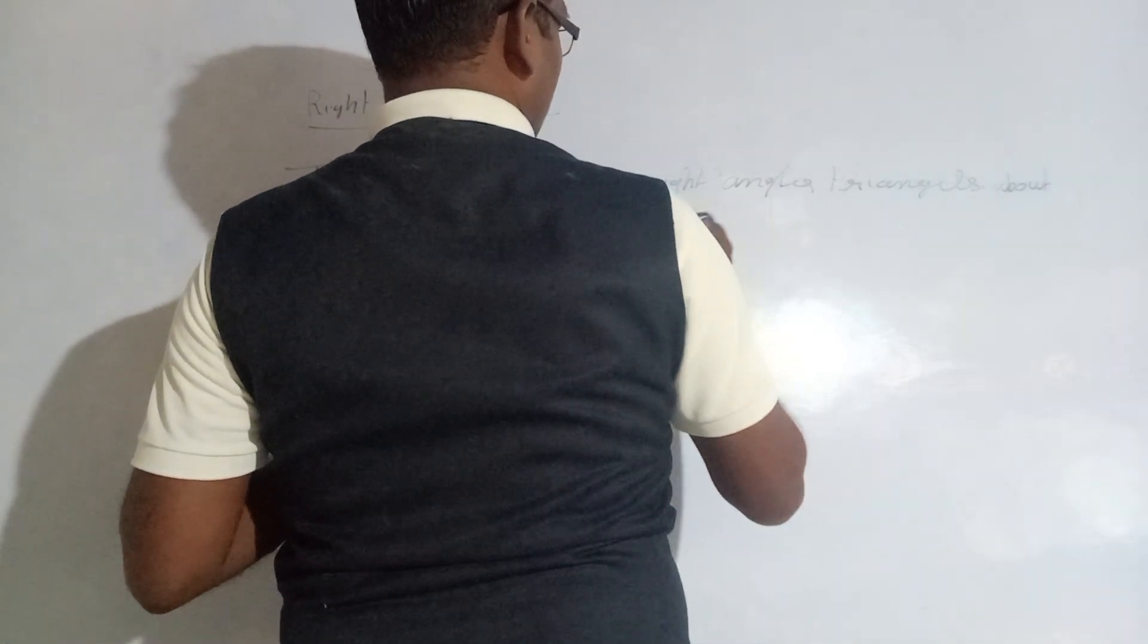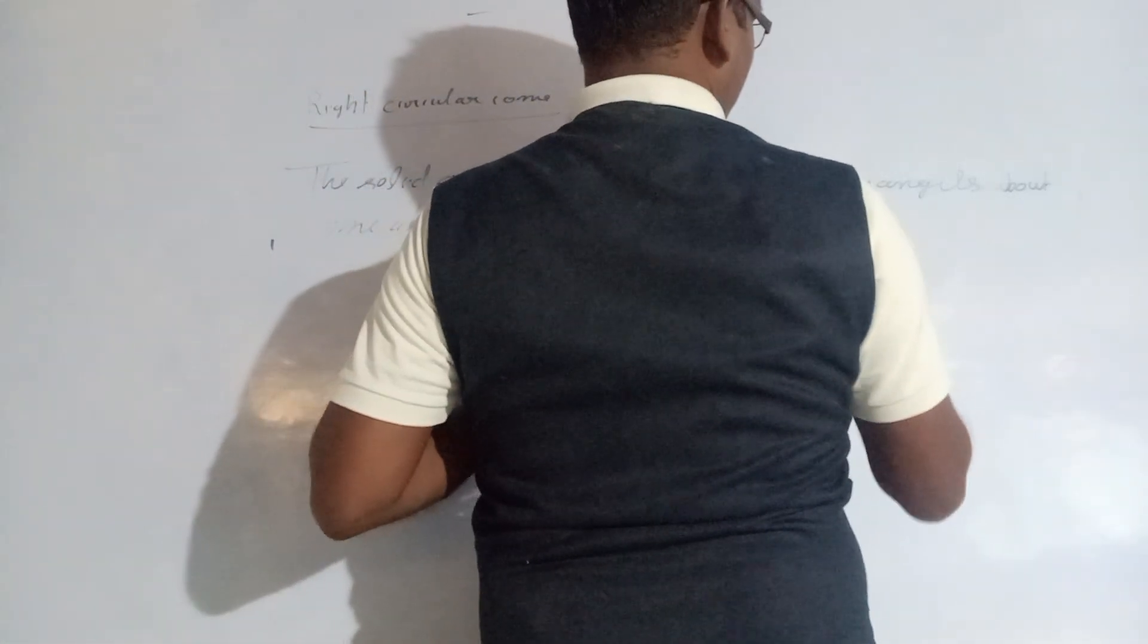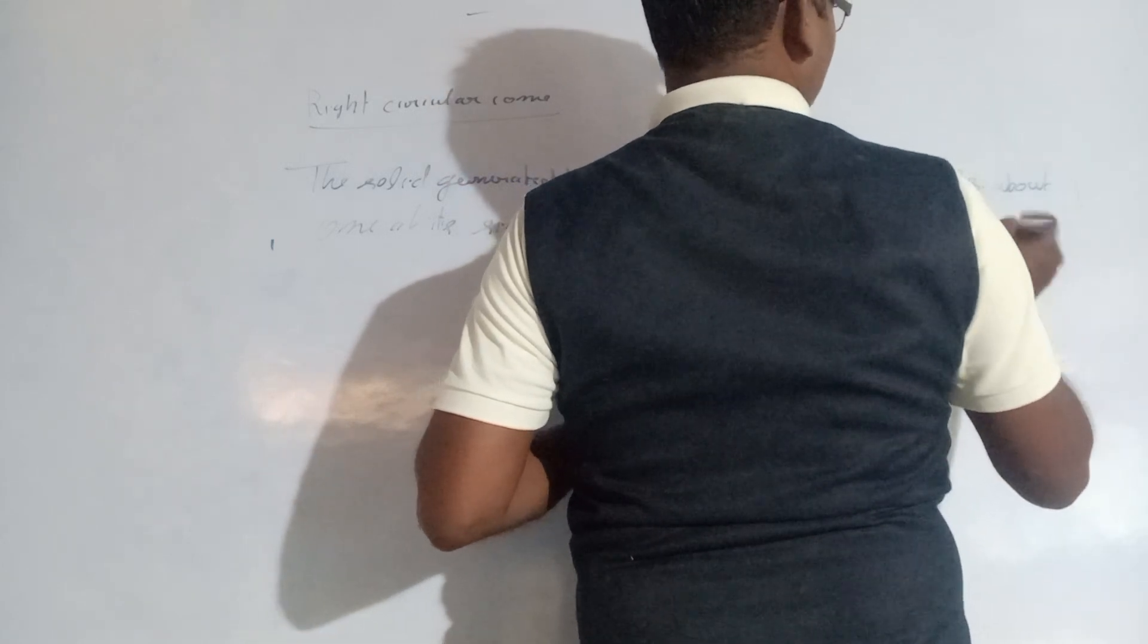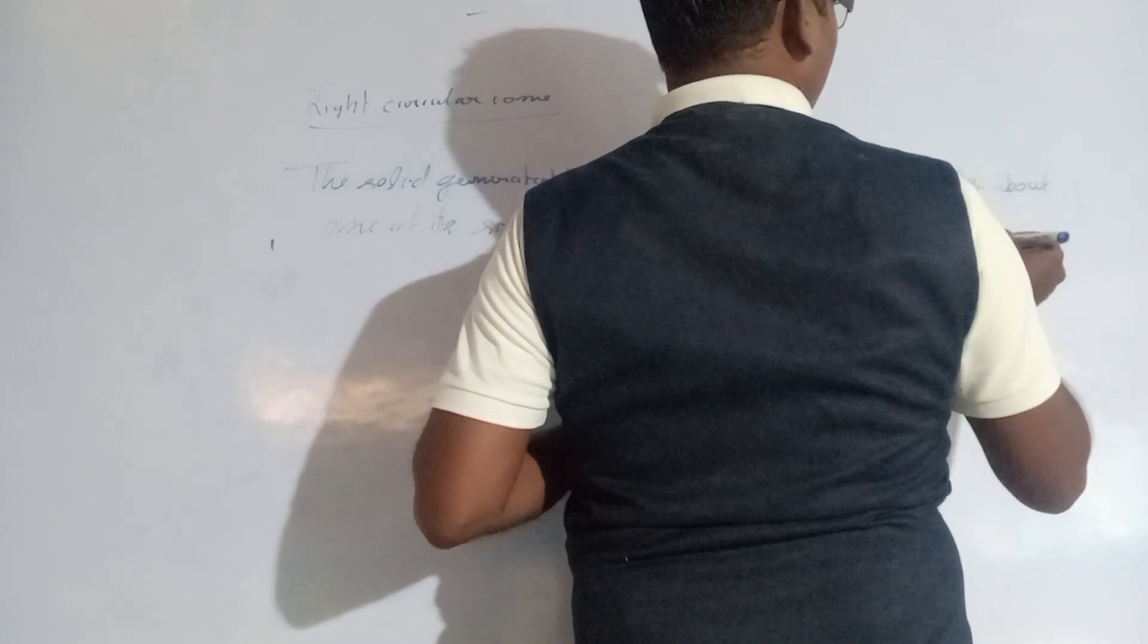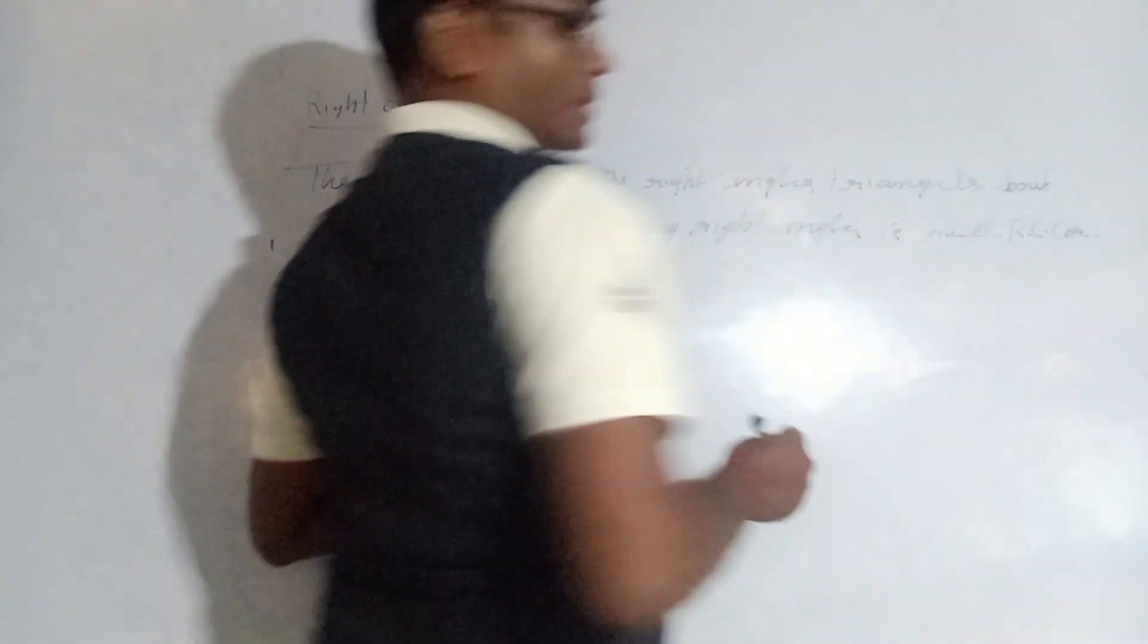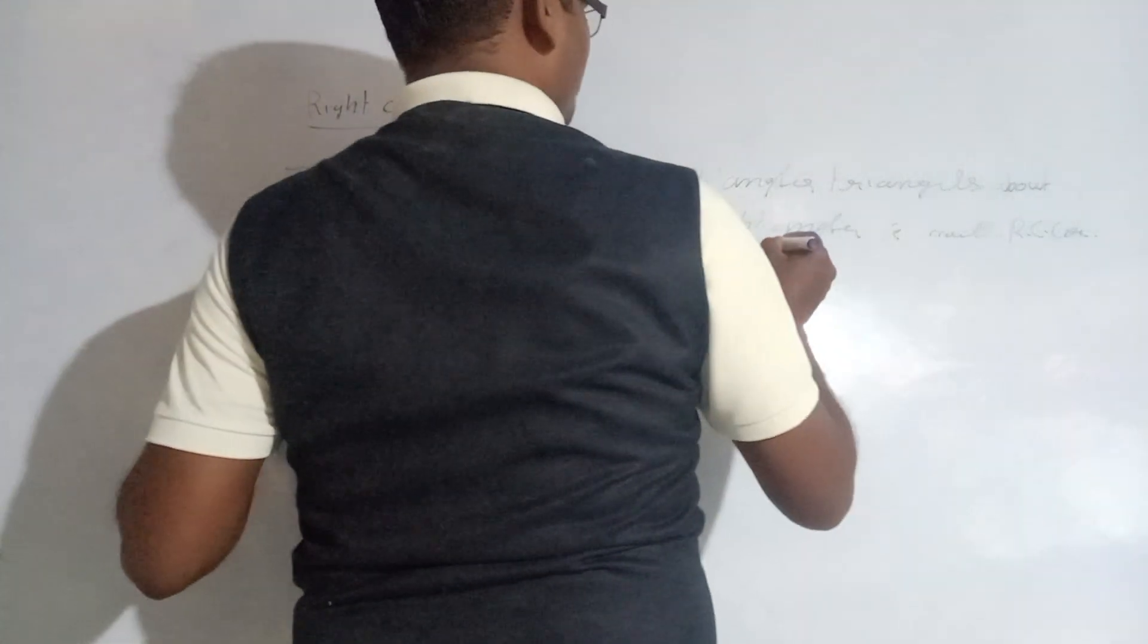A right angle triangle rotated about one of its sides is called a right circular cone.